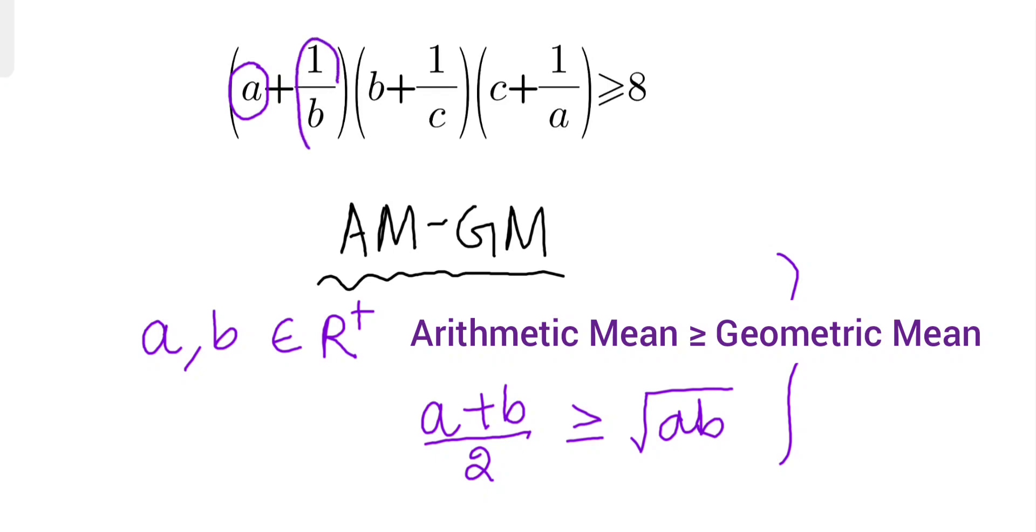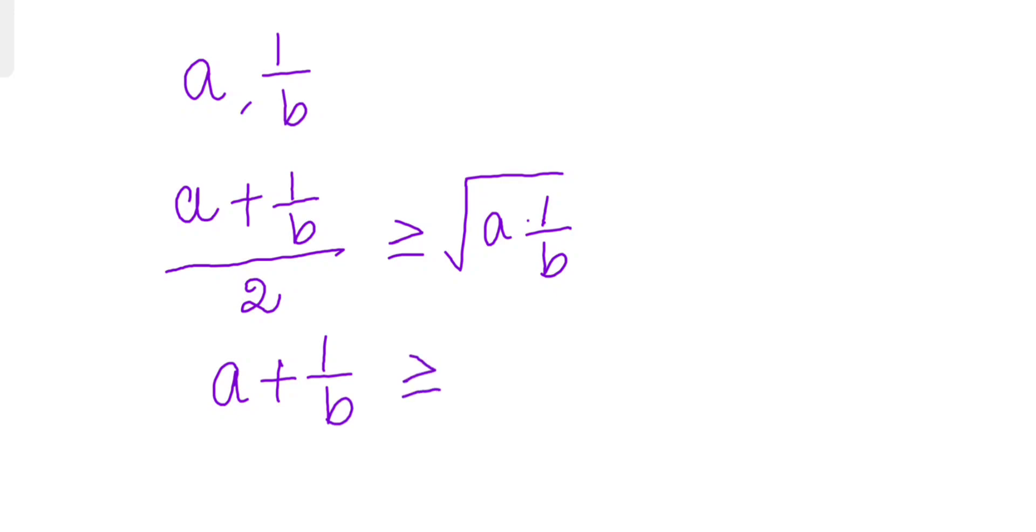a term and 1 by b is another term. Hence let's apply AM-GM inequality to these two real numbers. So this is going to be a plus 1 by b by 2 will be greater than or equals to square root of a into 1 by b. So basically we can write a plus 1 by b is always greater than or equals to 2 into square root of a by b.